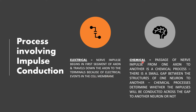In the chemical process, the passage of a nerve impulse from one axon to another is a chemical process. There is a small gap between the structures of one neuron and another — that small gap is called the synaptic cleft. Chemical processes determine whether the impulse will be conducted across the gap to another neuron or not.